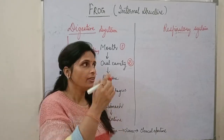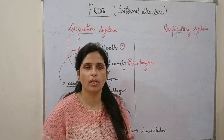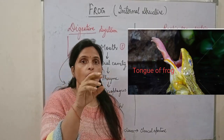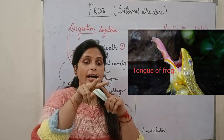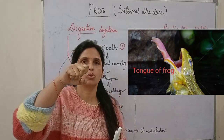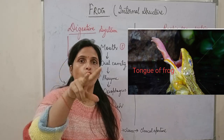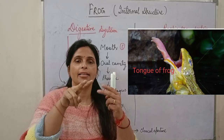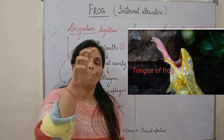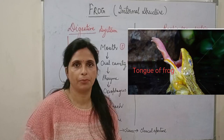In the buccal cavity there is a tongue. In case of frog, the tongue is a little special. It is muscular, it is long, it is bifurcated, and it is a folded structure. This tongue helps the frog catch prey or insects.